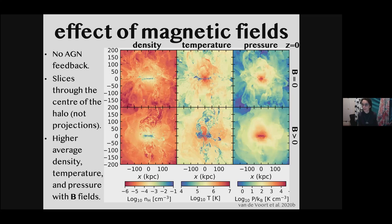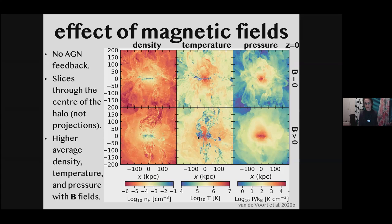That brings me to another source of non-thermal pressure support: magnetic fields. These are simulations I did last year — without AGN feedback, but that doesn't matter much. These are slices showing density, temperature, and pressure. The top panels are purely hydrodynamic with no magnetic fields; the bottom panels include magnetic fields. The small-scale structure is quite different: without magnetic fields you have random small-scale fluctuations, whereas with magnetic fields you get more coherent structure and more dense, low-temperature gas near the galaxy at the disk-halo interface.